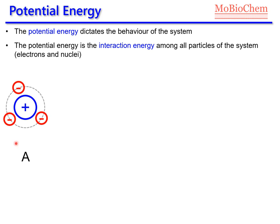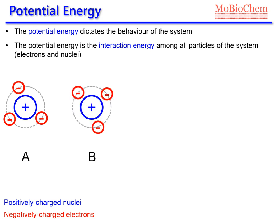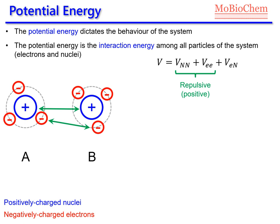For example, let's say we have an atom A, which is formed by a positively charged nucleus and also by negatively charged electrons, represented here in blue and in red respectively. We have a second atom B, also with a positive nucleus and some electrons. The potential energy is the interaction between the nucleus of atom A and the nucleus of atom B. We also have electron-electron interactions and electron-nucleus interactions.